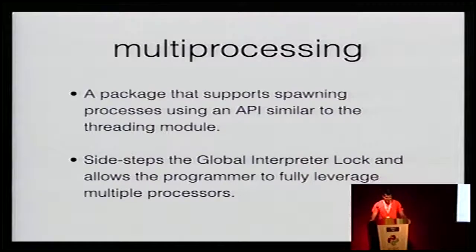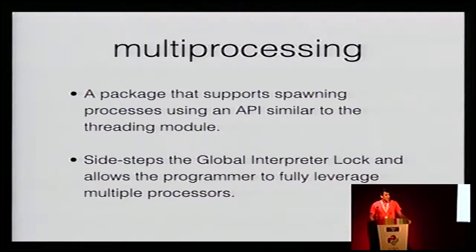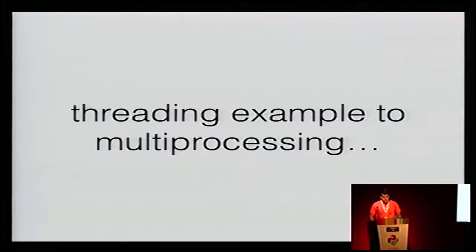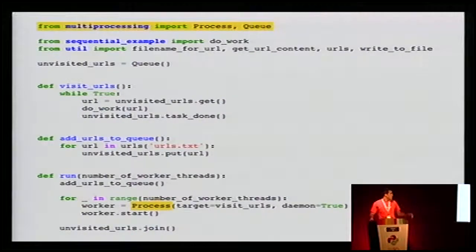Now let's try multiprocessing. With multiprocessing, these are actual processes, so they can run on separate cores. The cool part is that the API is very, very similar to threading. It sidesteps the interpreter lock. It's really easy to change our threading example to a multiprocessing example — only the highlighted lines change. Instead of getting Queue from threading, we get it from the multiprocessing module, and instead of Thread we create a Process. Everything else is the same.